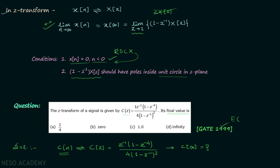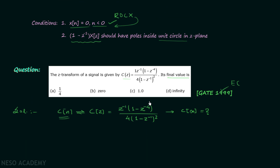Since no ROC is given along with the Z-transform, we assume condition 1 is satisfied. Now we will check condition 2, for which we first need to find the function (1 - Z⁻¹)·C(Z). So we will compute (1 - Z⁻¹) multiplied by C(Z).